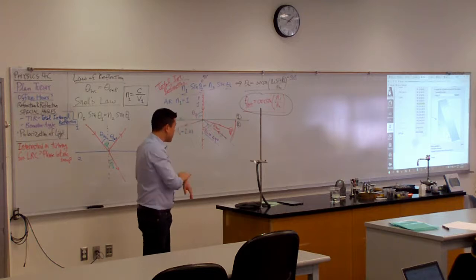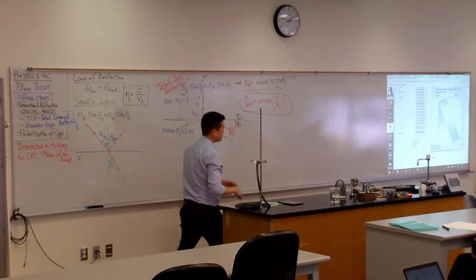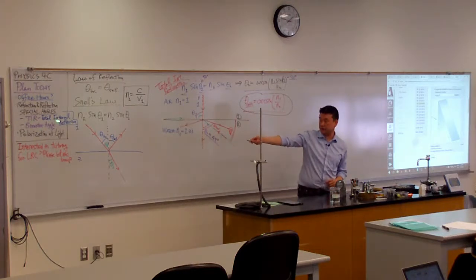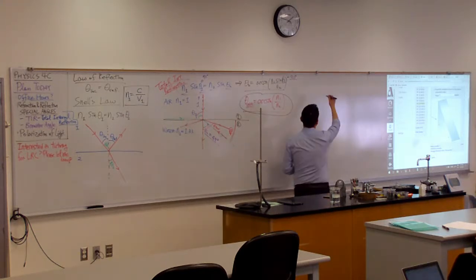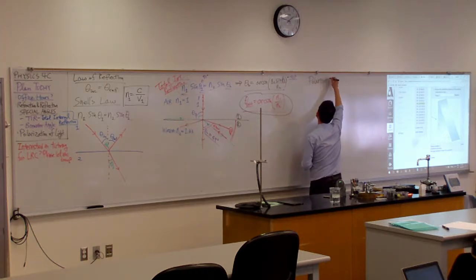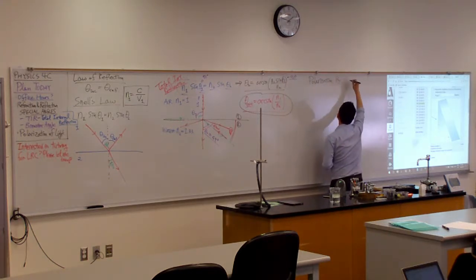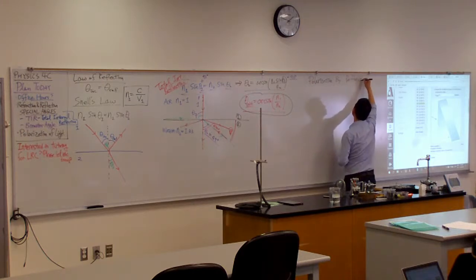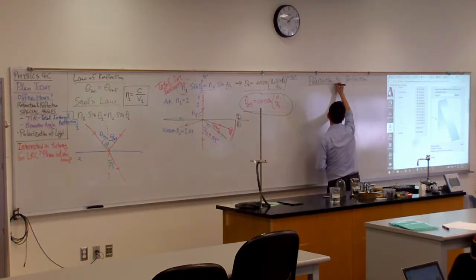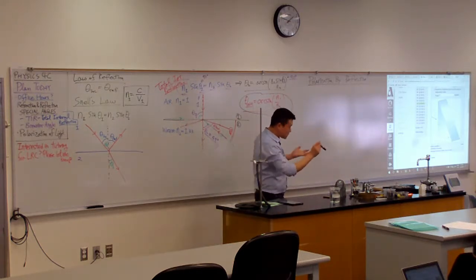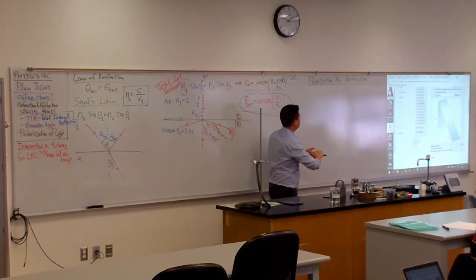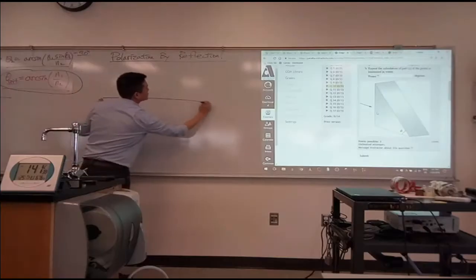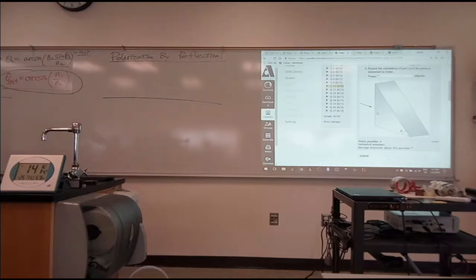With that visual image, let me go over what's called Brewster's angle — or we could call it polarization by reflection. So this is the picture I want you to imagine. Let's use the example of water, with a very flat water surface.